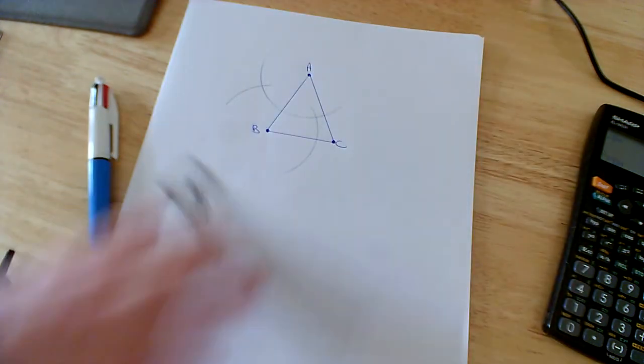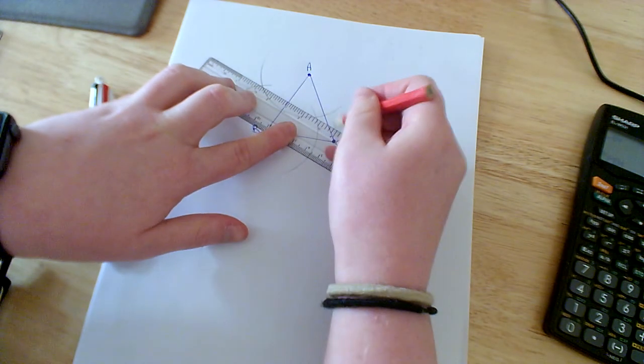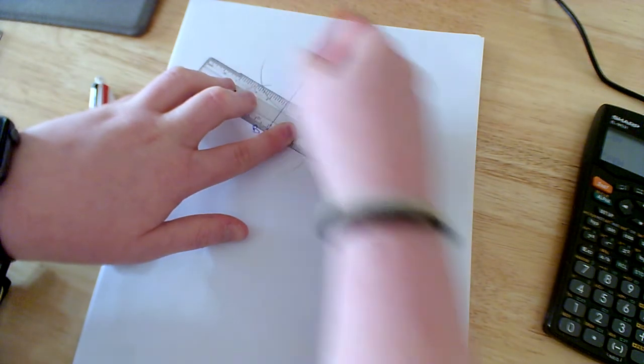And then I join those two lines together where they're after intersecting at one another, and that is going to be called my perpendicular bisector of AB.